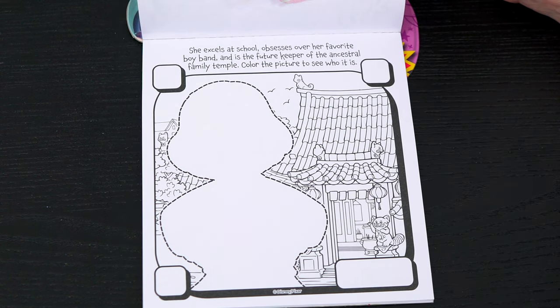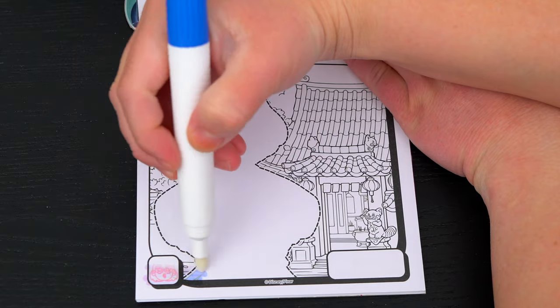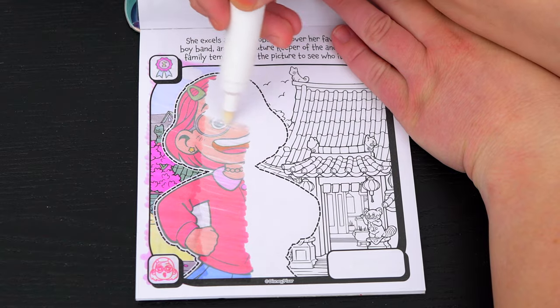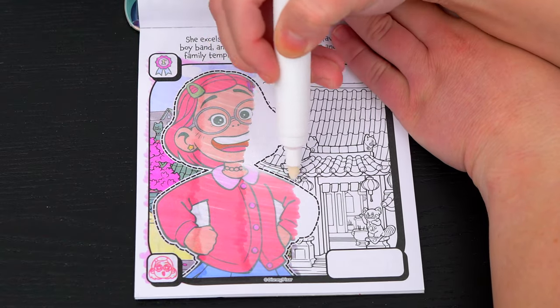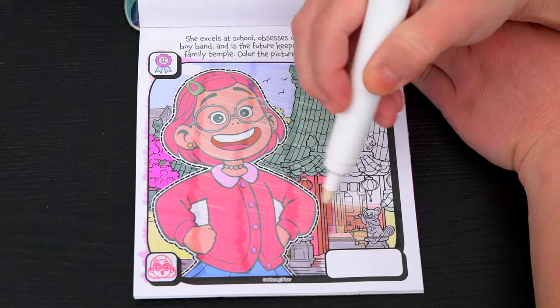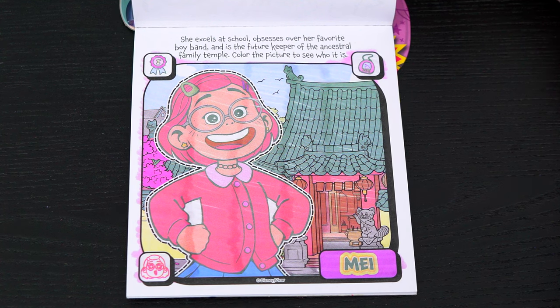She excels at school, obsesses over her favorite boy band, and is the future keeper of the Ancestral Family Temple. Color the picture to see who it is! It's May! So awesome!